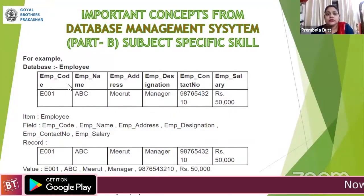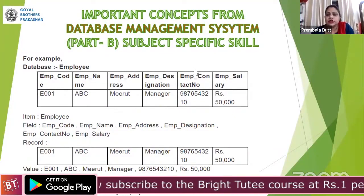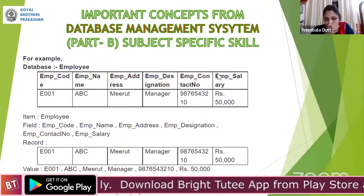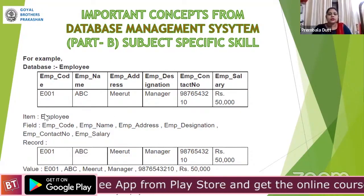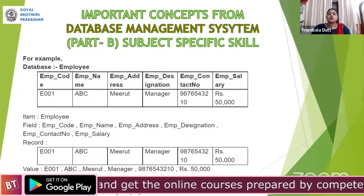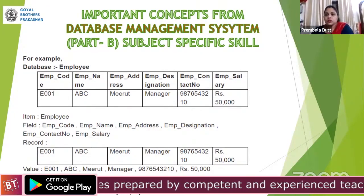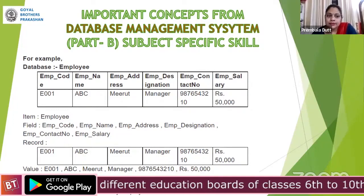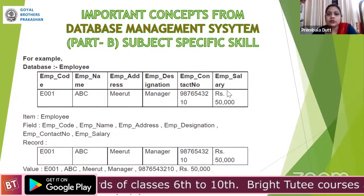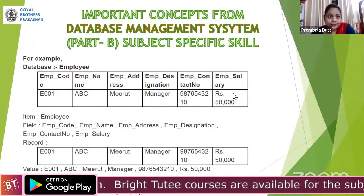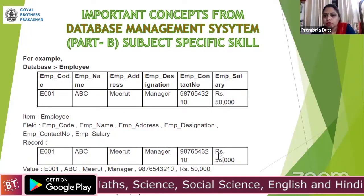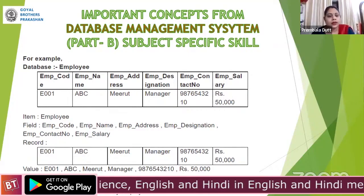This is one structure showing the fields I was telling you about: employee code, employee name, employee address, employee designation, employee contact number, employee salary — these are all the fields. The item for this particular table is employee. Item is also called as entity — the table name is also called as entity. Here it is employee. The field is the column, and the record is one complete row — for example, E001, ABC — a horizontal row holding one complete record of one employee.